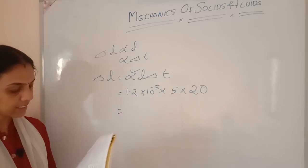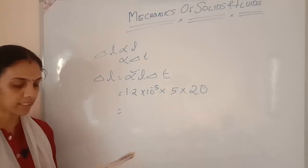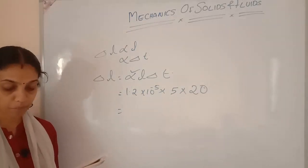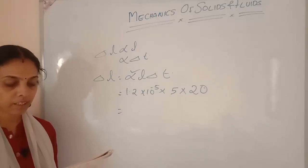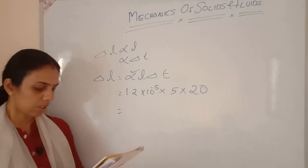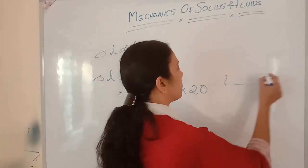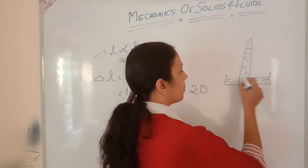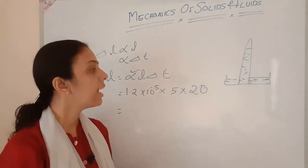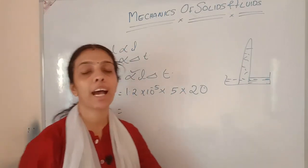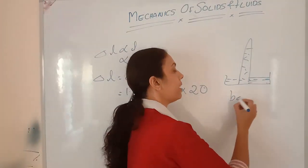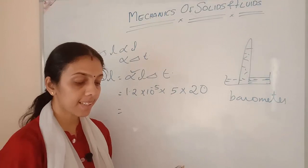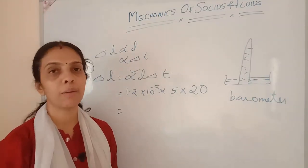The pressure of the atmosphere at any point is the weight of the air column of unit cross-sectional area; its unit is bar. Identify the given diagram and write its use. The diagram is showing a mercury barometer, used to measure atmospheric pressure.